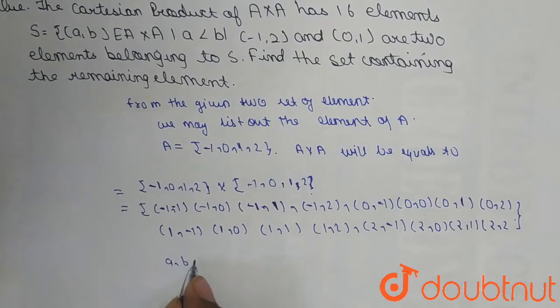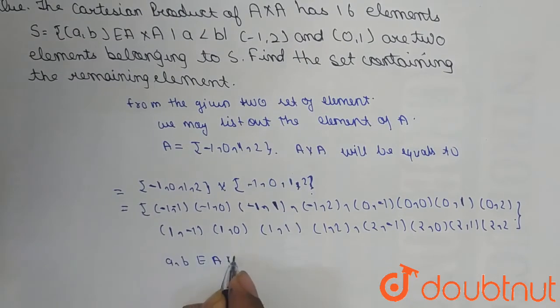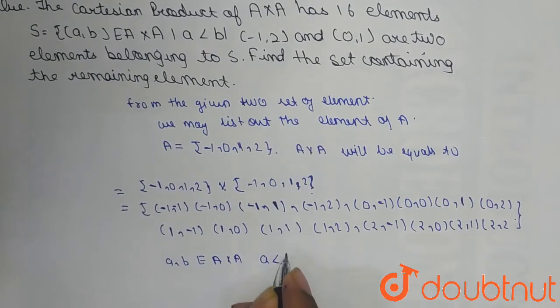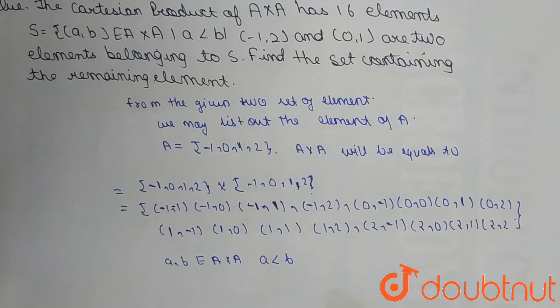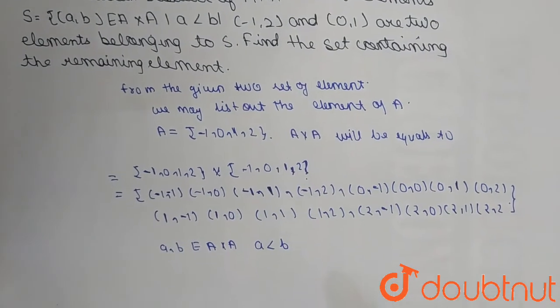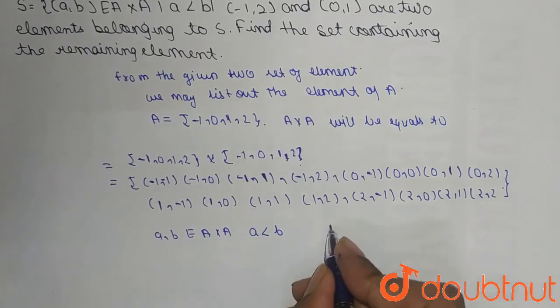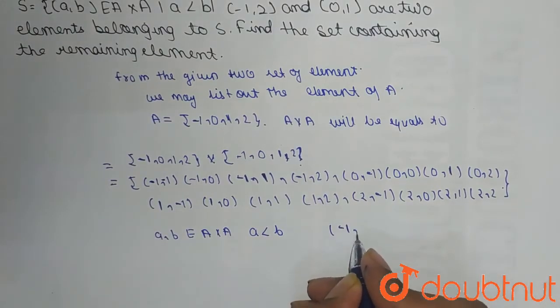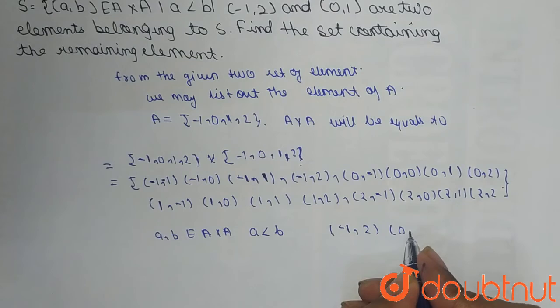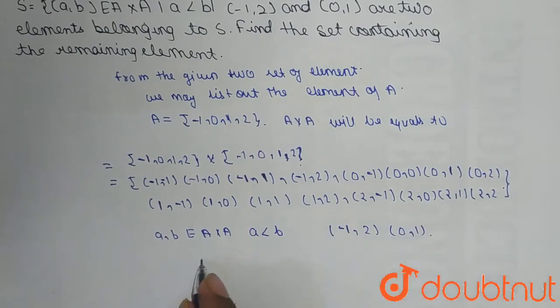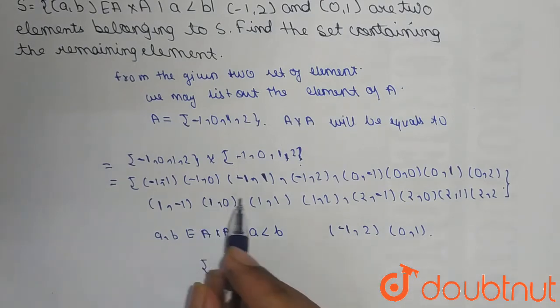Now we have the condition that (a,b) is element of A cross A where a is less than b. We're given two elements: (-1,2) and (0,1). We have to find the remaining elements where a is less than b.